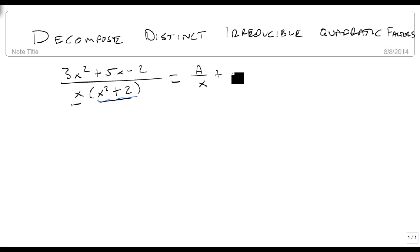We're going to get something over x plus something over x squared plus 2. But now we've got a problem.